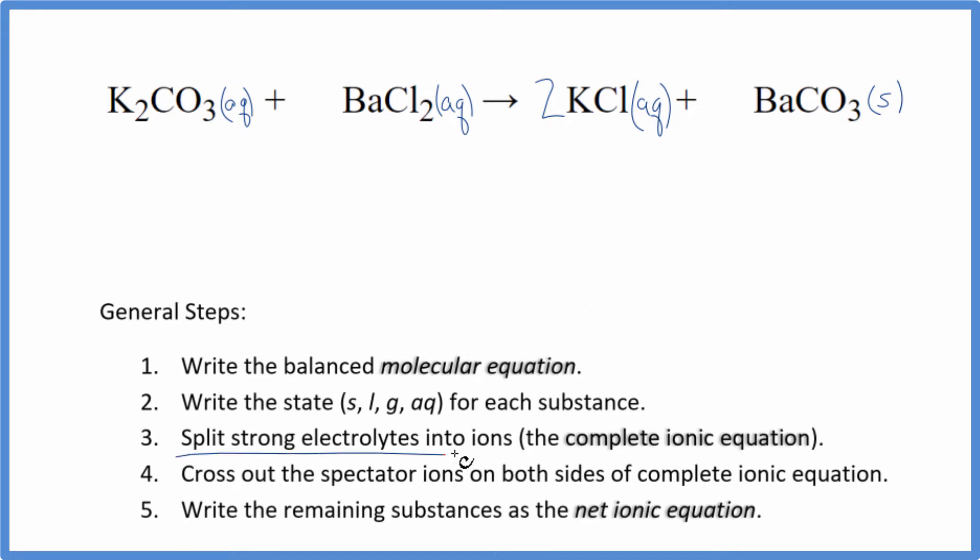Next, we're going to split the strong electrolytes into their ions, and this will give us the complete ionic equation. Potassium, that's in group one. It has a one plus ionic charge on each one of those potassium atoms. Carbonate ion, the whole thing is two minus. That's a good one to remember. So we have two potassium ions. I won't write states right now. Let's do that at the end. The carbonate ion, that's CO3 two minus.